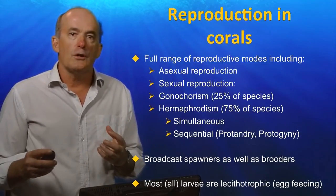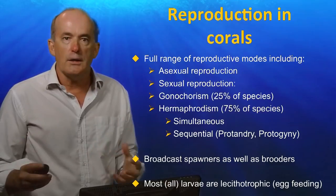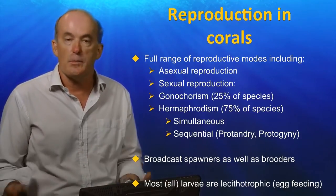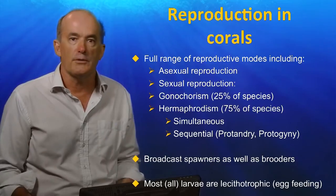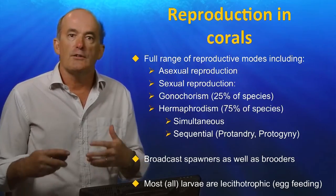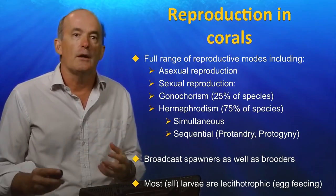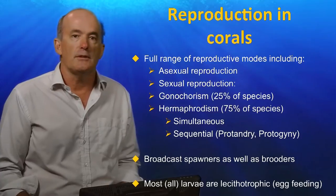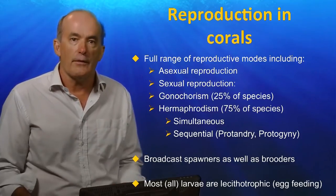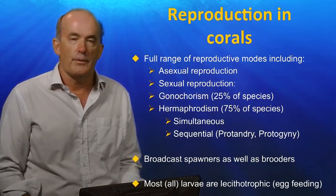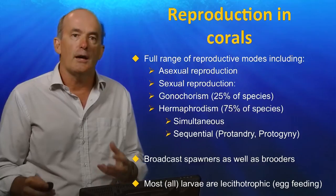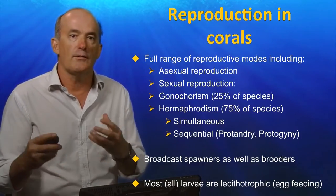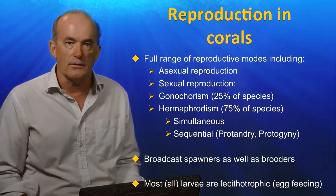Reef-building corals show a broad range of reproductive strategies, including asexual reproduction through the division of polyps, as well as sexual reproduction involving gonachorism in some species and hermaphrodism in others. In fact, most corals are hermaphrodites, as opposed to having separate sexes.